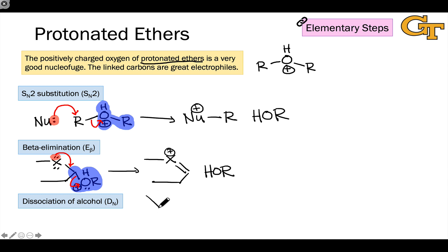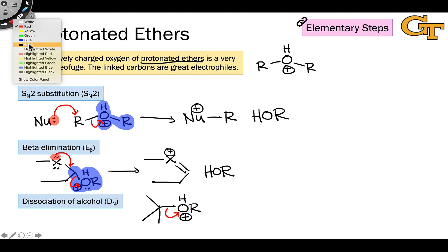If a carbocation or other stabilized species with positive charge can form just by dissociation of one of the CO bonds in the protonated ether, then it may just occur on its own in a D sub N or dissociation of a nucleofuge step, and here there's no nucleophile involved.